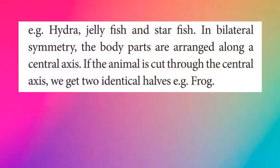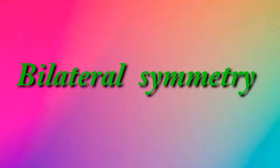In bilateral symmetry, the body parts are arranged along a central axis. If the animal is cut through the central axis, we get two identical halves. Example: frog. In bilateral symmetry, cutting the animal along the central axis gives 2 equal halves.